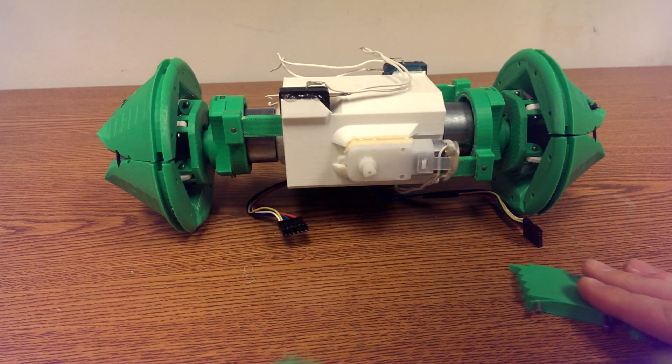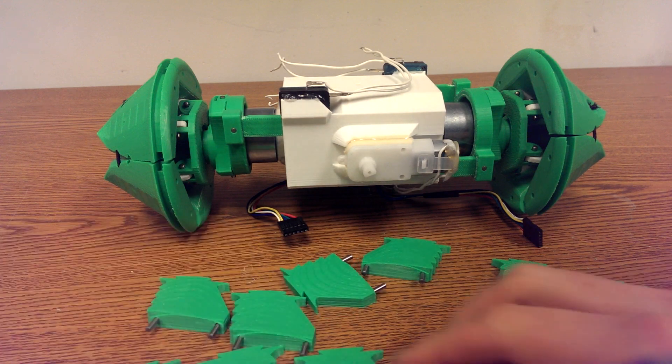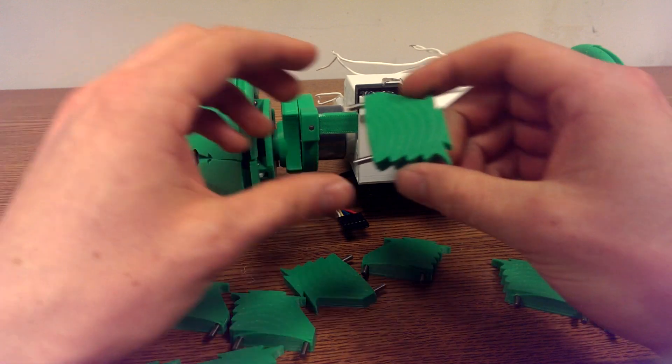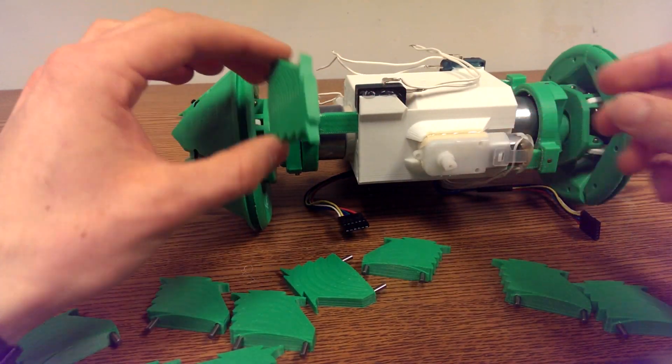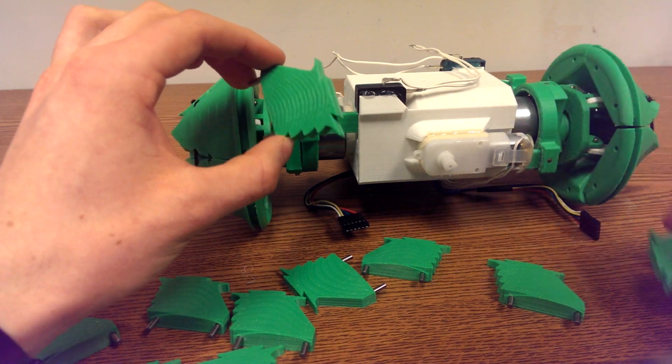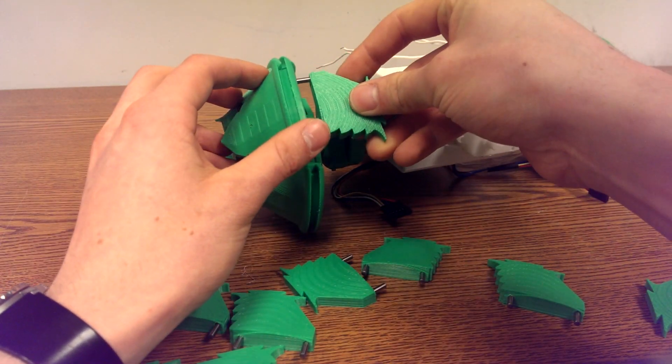At this point the body of the robot is pretty much done. I am going to go ahead and install the off-road grips that just press fit into the pedals of the wheel. So you can see I already have the metal pegs pressed into the grips. And I will go ahead and just install all of these now.